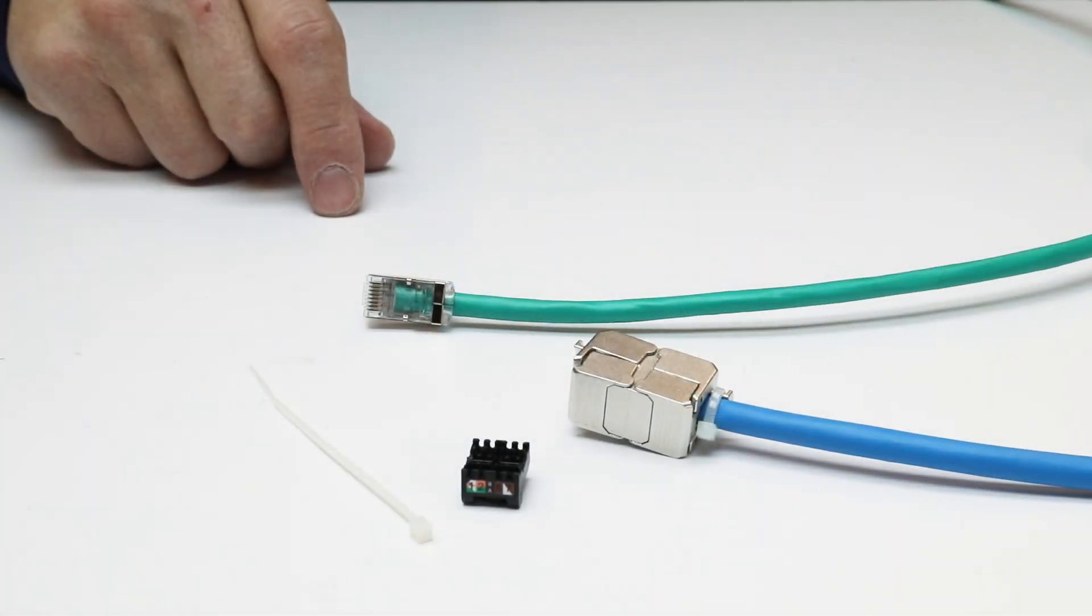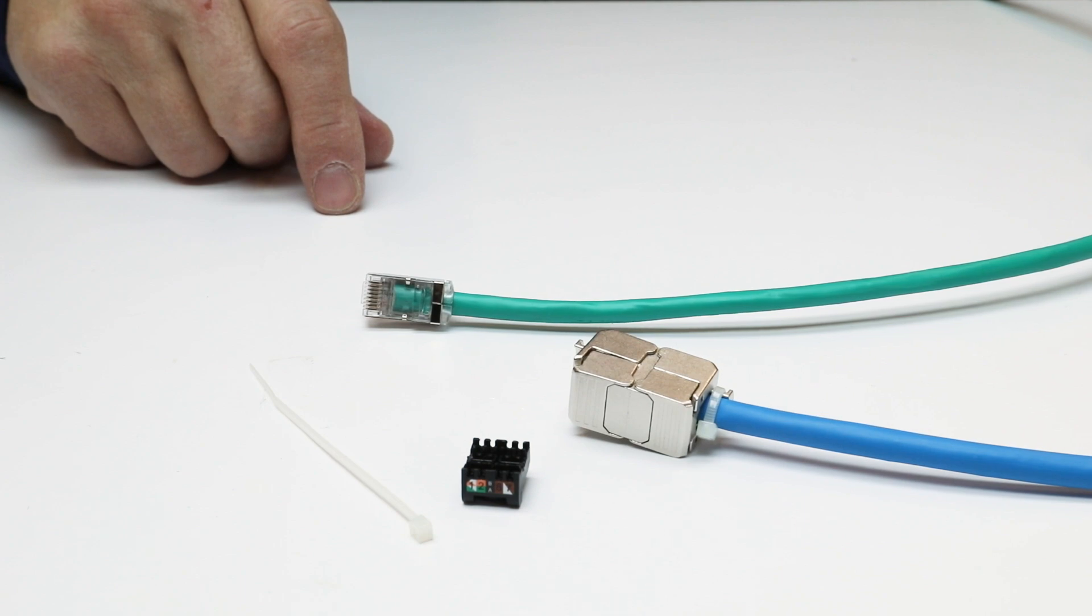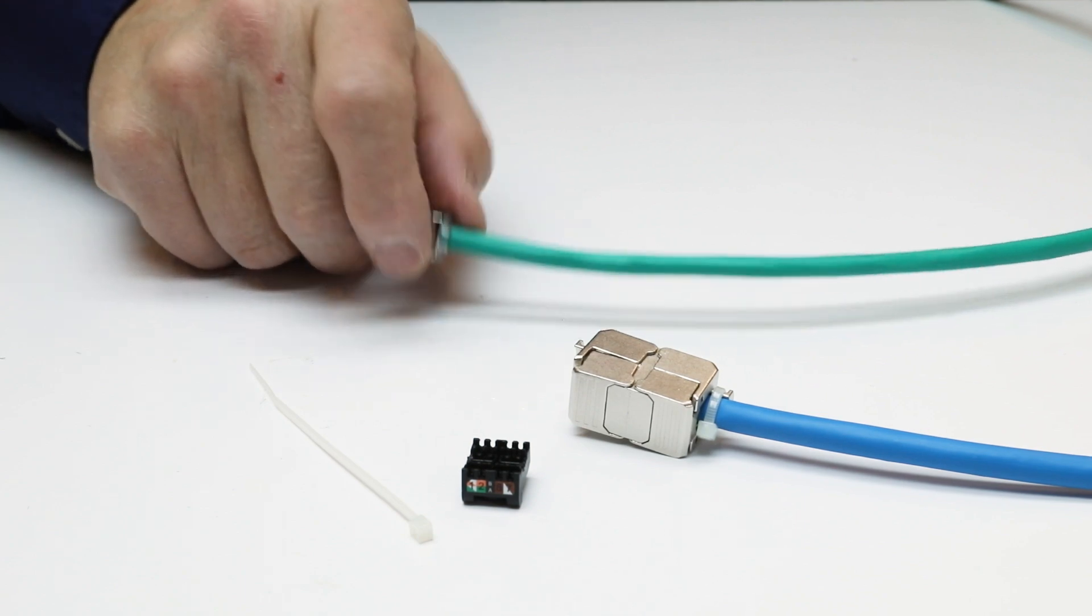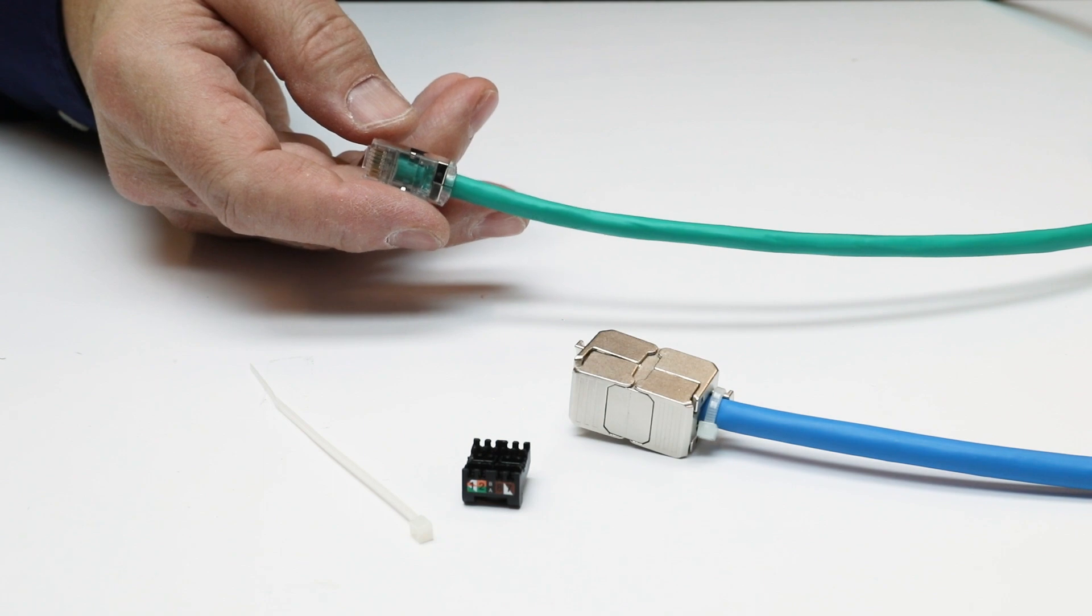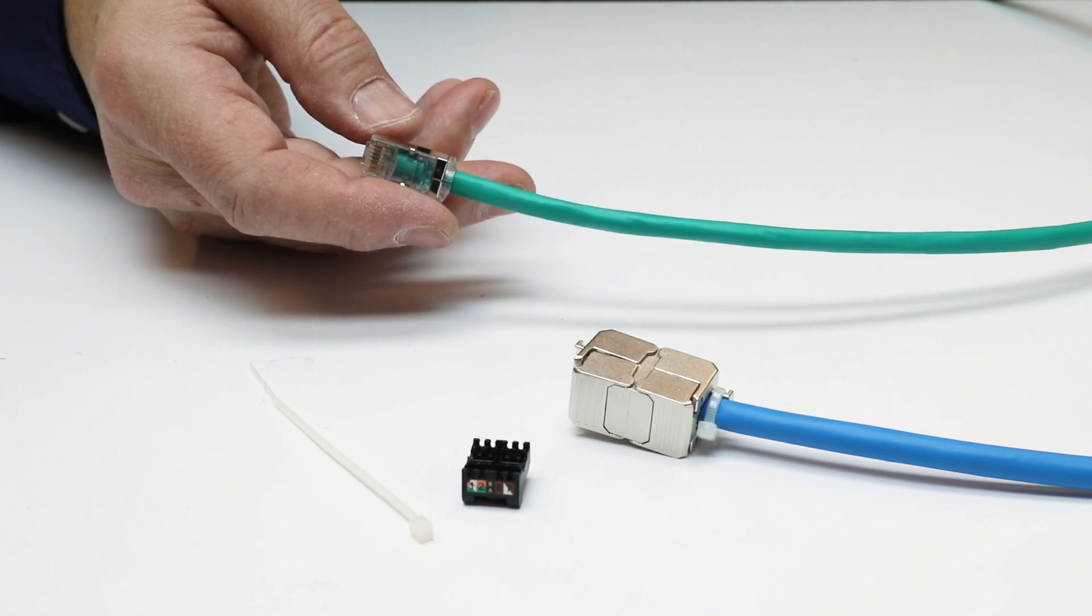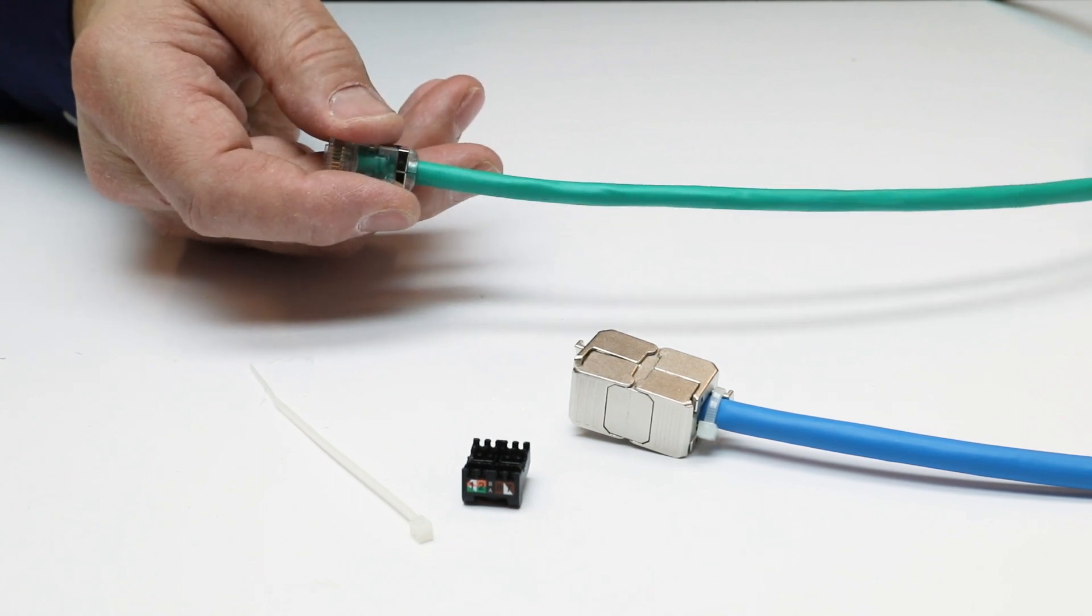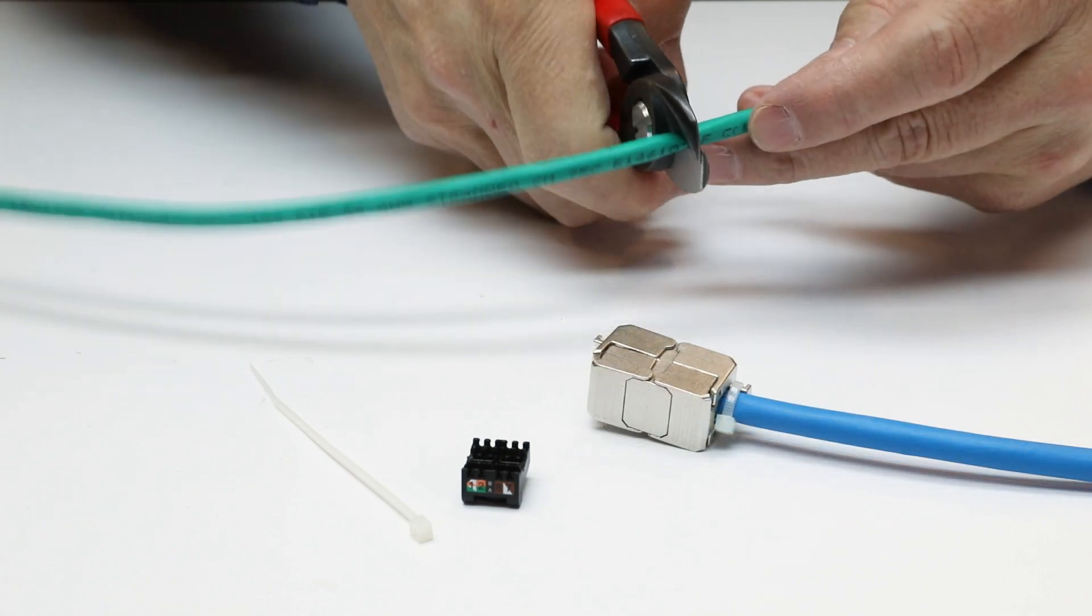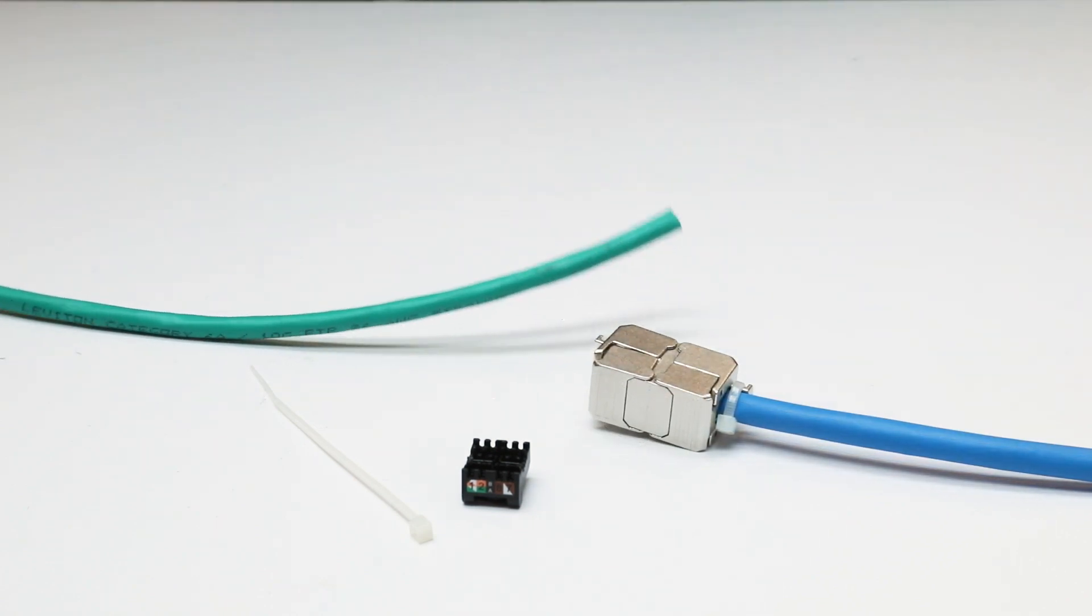The VXC Coupler can be used with any 24 or 26 gauge shielded or unshielded Category 6 or Category 6A patch cord. Here we are using a Leviton 6AS10 Category 6A patch cord, which has a shielded construction. We will be using half of the cord to wire the VXC Coupler.